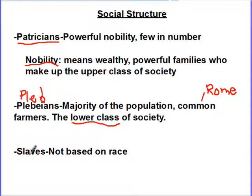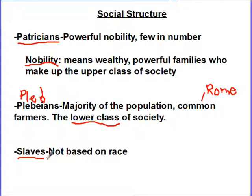The last part — the lowest part of the totem pole — is the slaves. Not based on race, so anybody could be a slave. If you owe somebody money, if you just lost a battle, they could use you as slaves. Slavery is absolutely rampant in Roman society, and it's actually one of the big reasons that the Republic ends up having problems, which we'll talk about later.